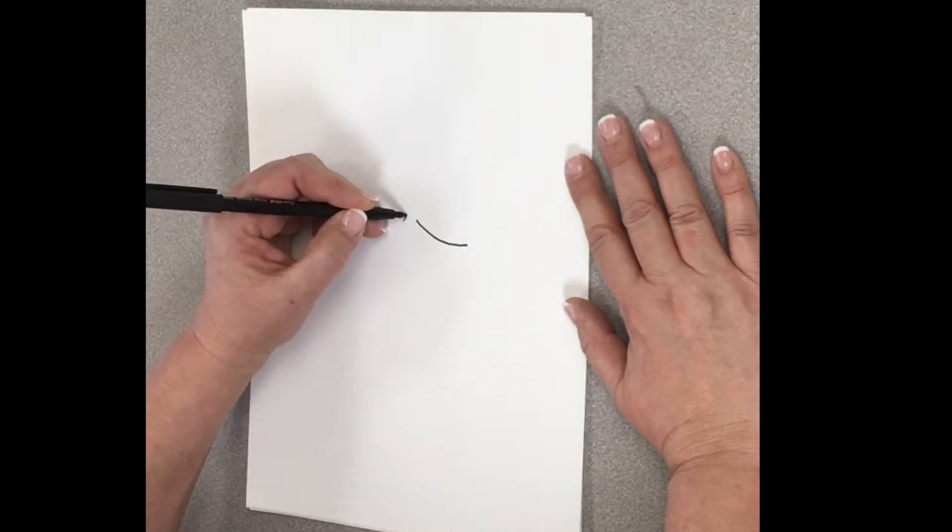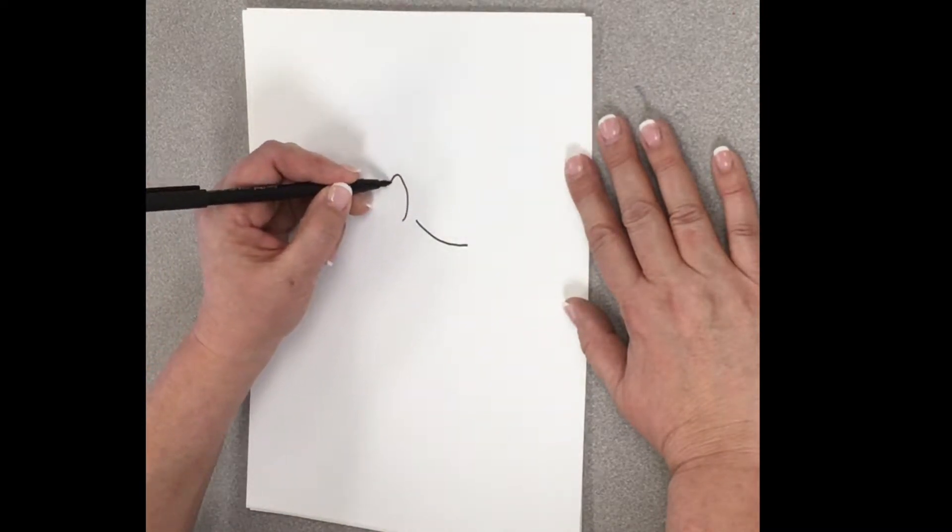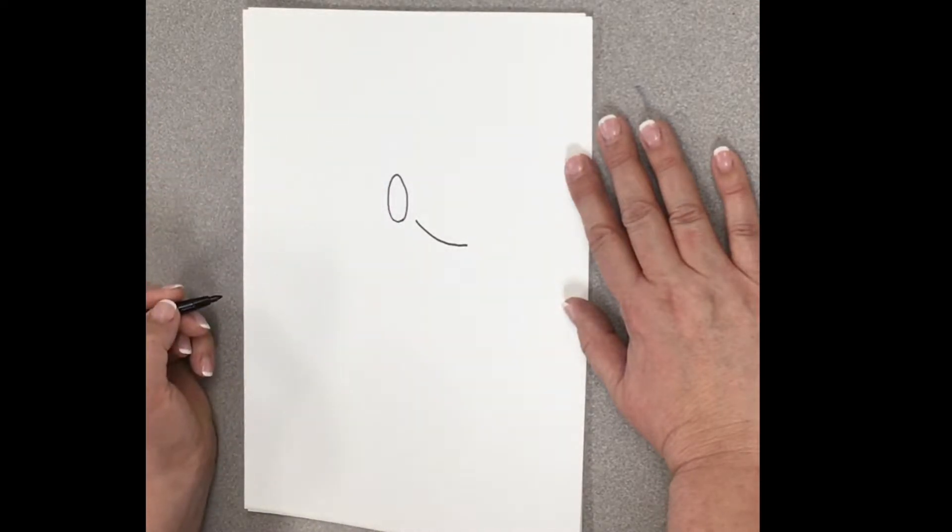Then, kind of over here, we're going to draw a great big, kind of like an egg shape, an oval.